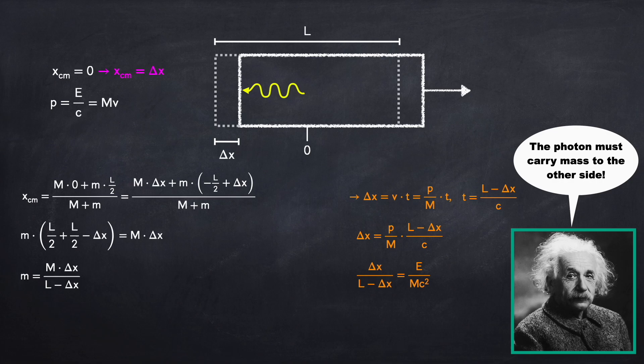Well this quantity delta x divided by L minus delta x is exactly what I have over here. So I can just plug that in to get that little m, the mass of the photon, equals big M, the mass of the box, times E over big mc squared. The big M's divide out, and we get that the mass of the photon is equal to its energy divided by c squared.